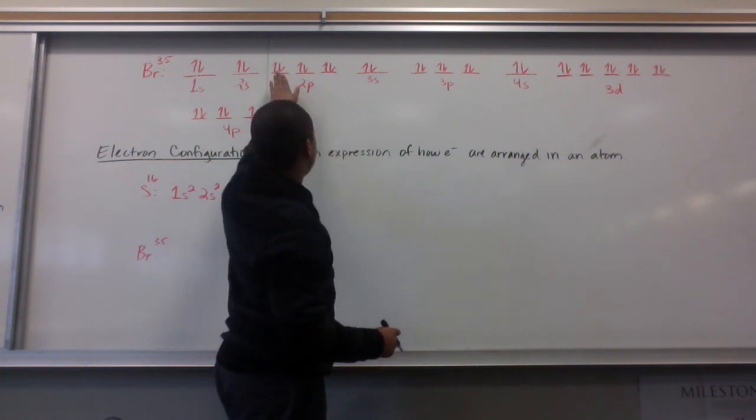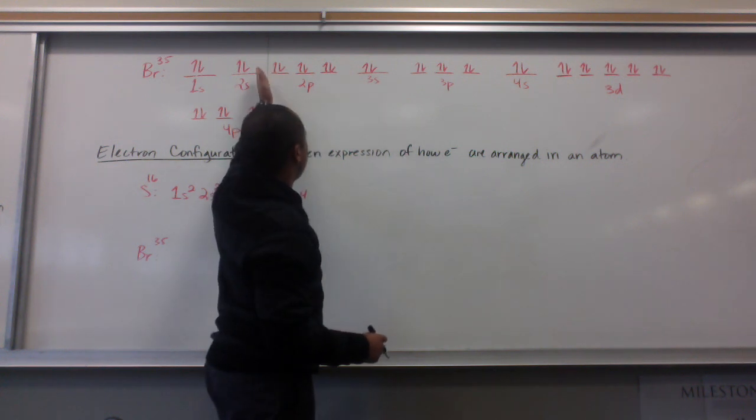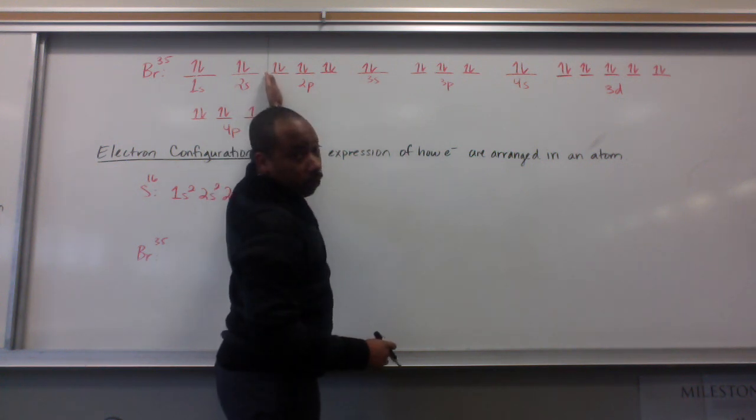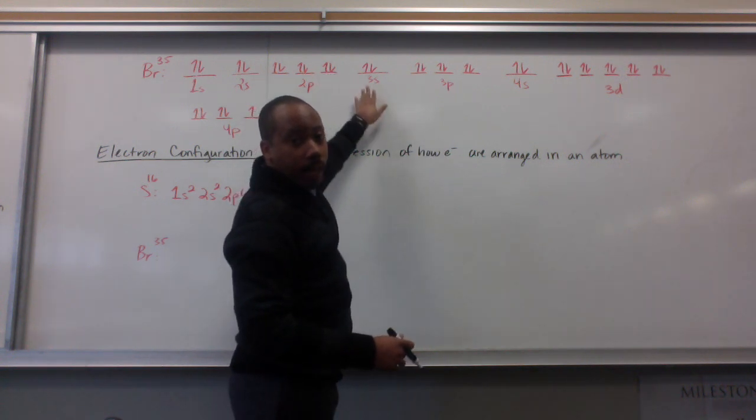And then 2p. The p sub level has three orbitals, three seats, two electrons a piece. So, I go from boron through neon.